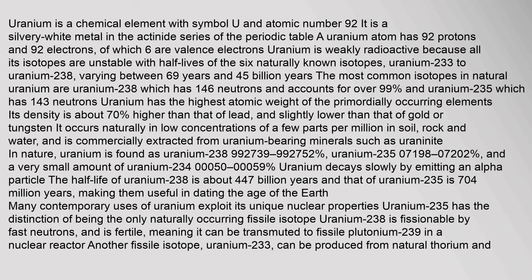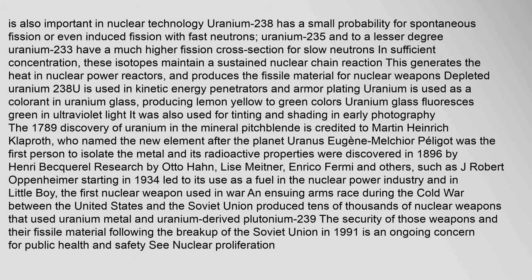Uranium is a chemical element with symbol U and atomic number, and is important in nuclear technology. Uranium-238 has a small probability for spontaneous fission or even induced fission with fast neutrons. Uranium-235 and to a lesser degree Uranium-233 have a much higher fission cross-section for slow neutrons. In sufficient concentration, these isotopes maintain a sustained nuclear chain reaction.